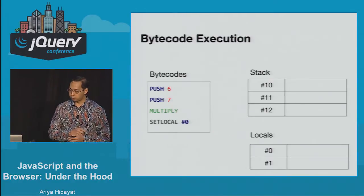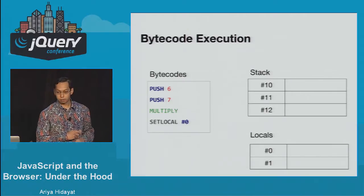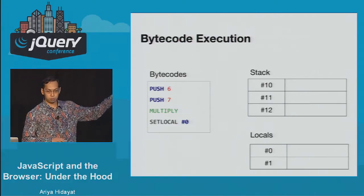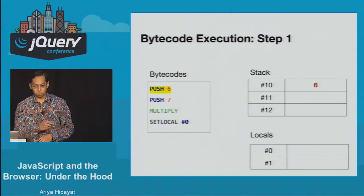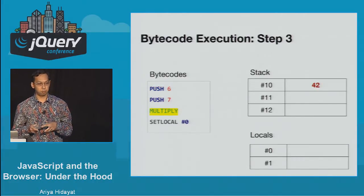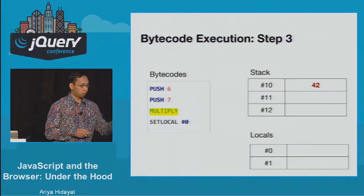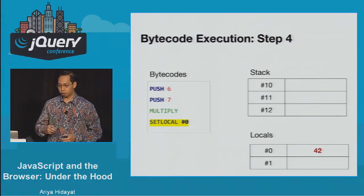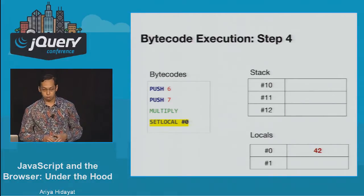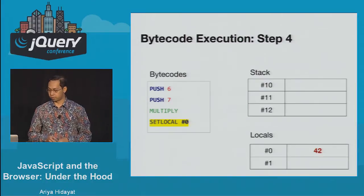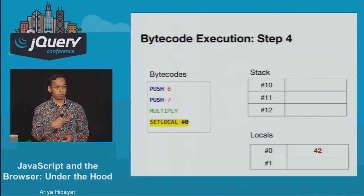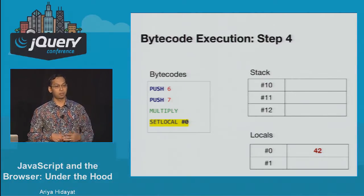Once in bytecode, we don't use identifier names anymore because they're encoded in the symbol table. Walking through the execution: push 6, push 7, multiply takes six and seven and pushes 42 to the stack removing the originals, and set_local puts that value in the local variable mapped to 'answer'. Executing this bytecode is really fast because there's no need to walk the entire syntax tree anymore — the virtual machine just takes the next bytecode and performs the necessary operation.